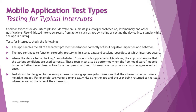Tests for interrupts should check the following: the app handles all interrupts correctly without negative impact on behavior; the app continues to function correctly, preserving its state, data, and session regardless of which interrupt occurs. Where the device has a blocking do-not-disturb mode that suppresses notifications, the app must ensure that waiting conditions are used correctly. These tests must also be performed when do-not-disturb mode is turned off after having been active for a long period of time.